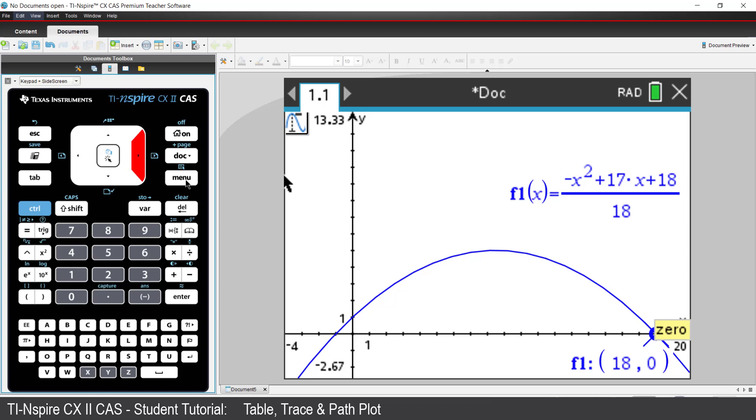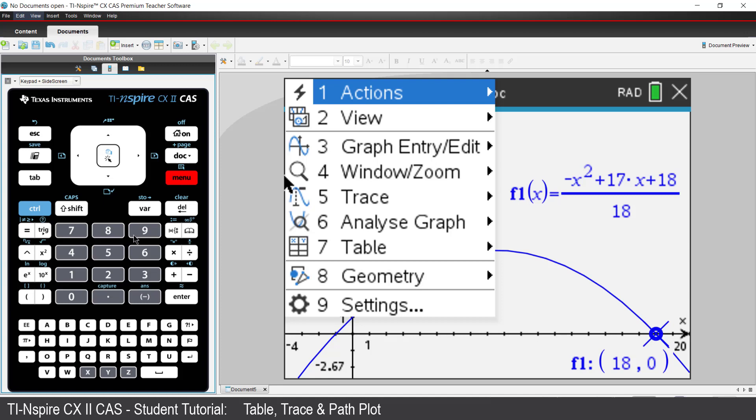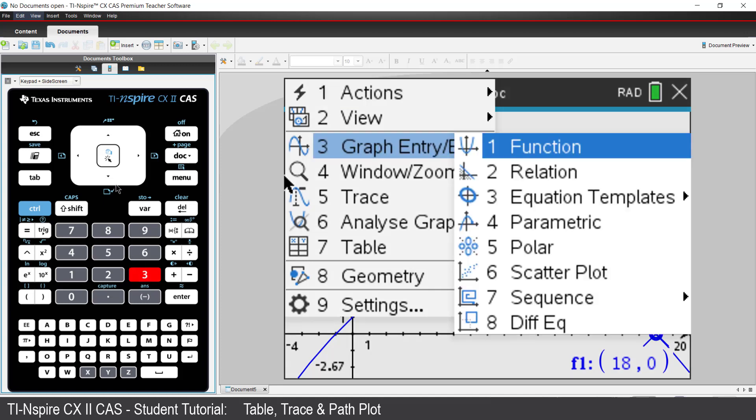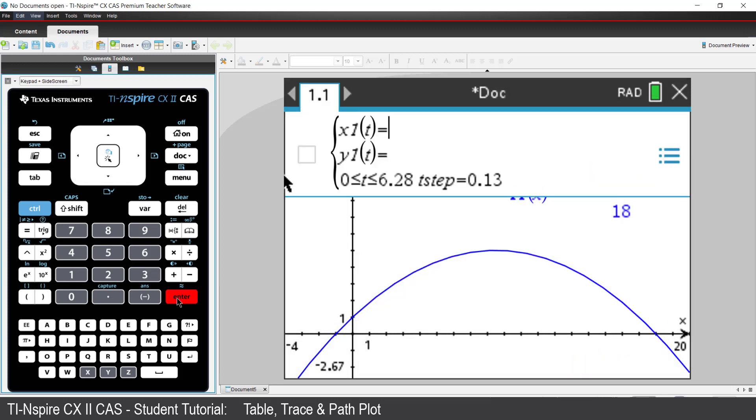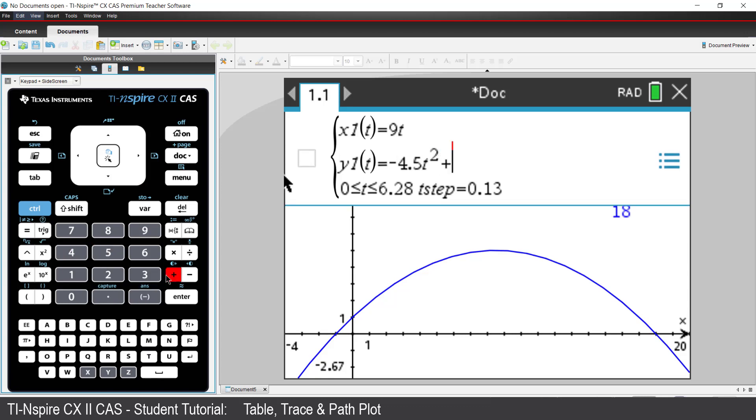The projectile's motion can also be represented as a parametric equation. I'll say x of t equals 9t and y of t equals negative 4.5t squared plus 8.5t plus 1.